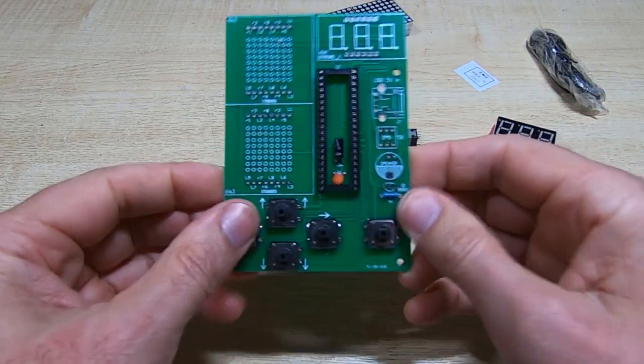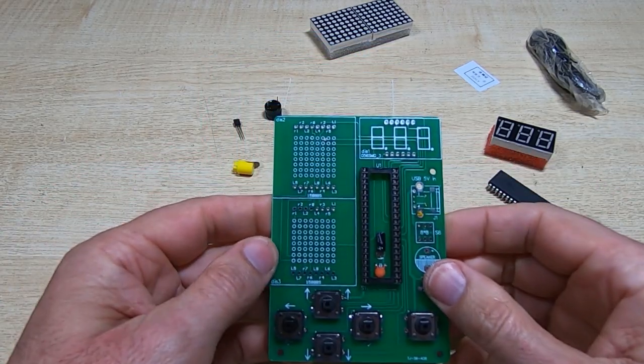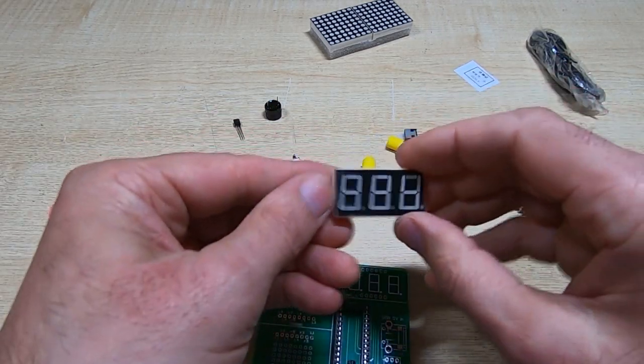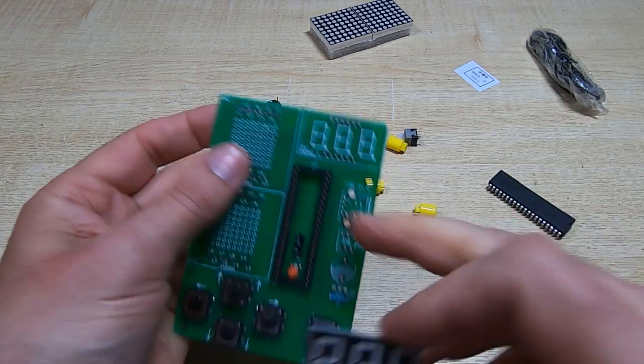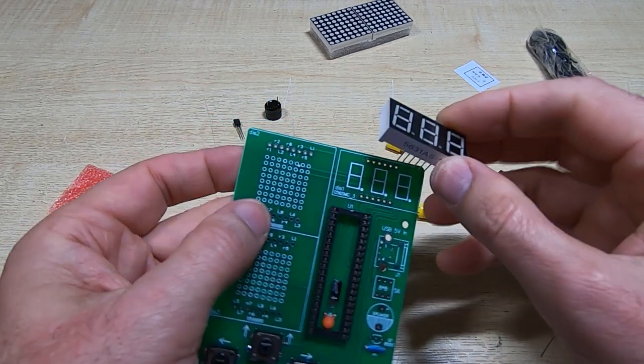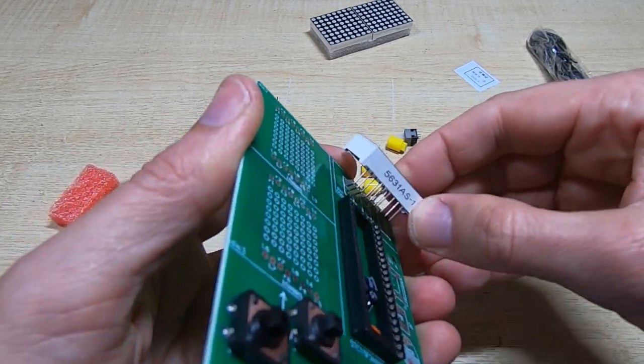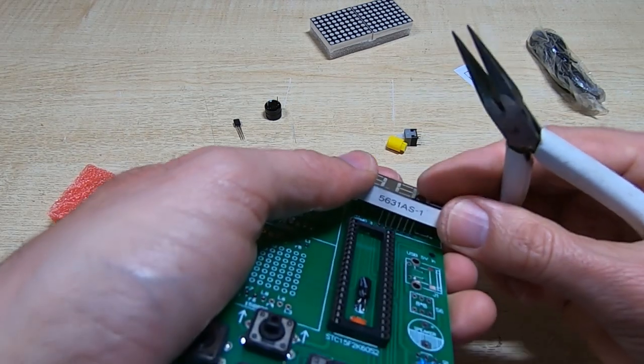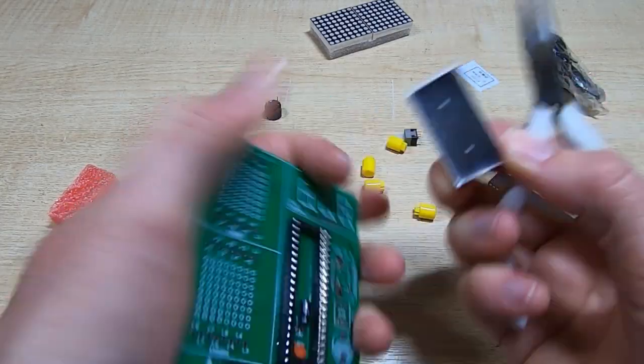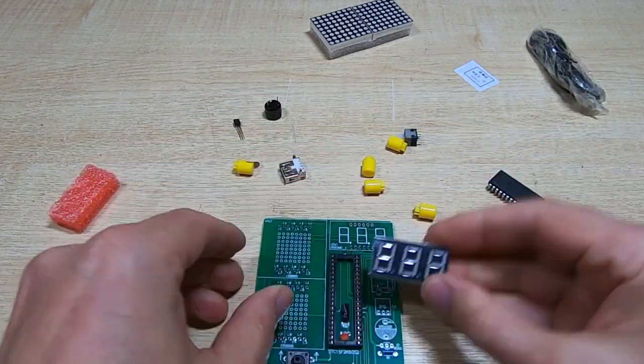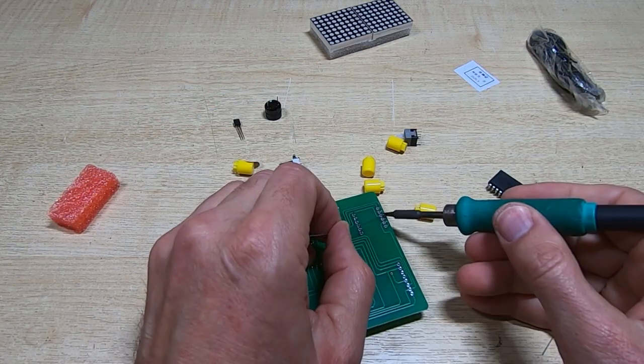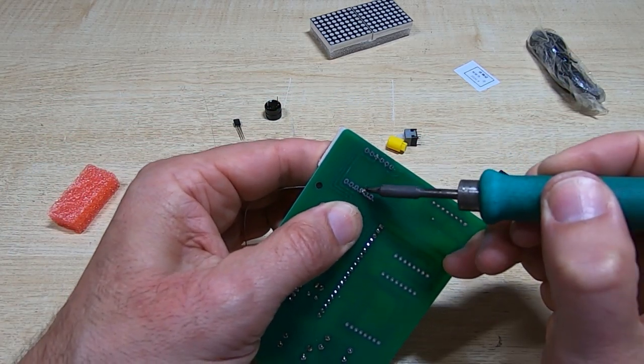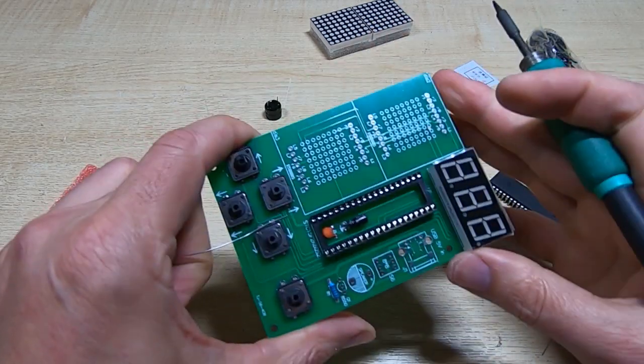Okay, that's the switches fitted. We'll fit the buttons later. Next thing I want to fit is the display. So we'll make sure I get it the right way up. Decimal points at the bottom as shown on the silk screen on the board. So again, we've got some bent pins on this, so I just need to straighten them out to get it to go into the board. And again, I'll just solder a couple of pins and then reheat them and push the display all the way onto the board, and then double check it's the right way up before I finish soldering.